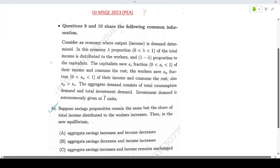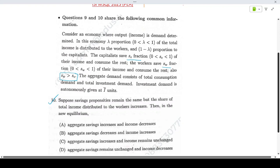The question says: consider an economy where output income is demand determined. In this economy, lambda proportion of the total income is distributed to the workers and 1 minus lambda proportion to the capitalists. The capitalists save SC fraction of their income and consume the rest, and the workers save SW fraction of their income and consume the rest. Also, SW greater than SC. The aggregate demand consists of total consumption demand and total investment demand. Investment demand is autonomously given by A bar units.